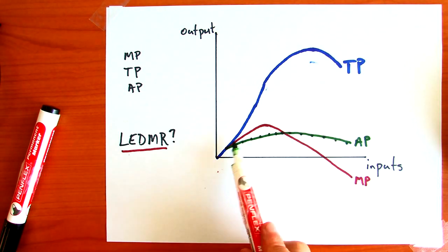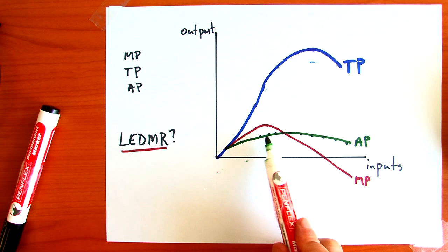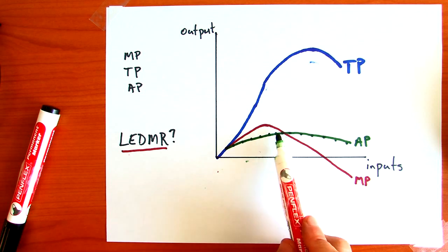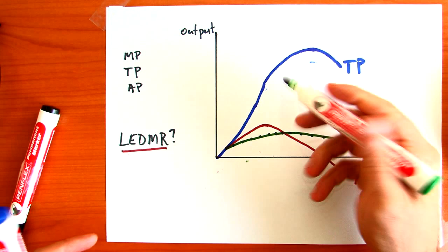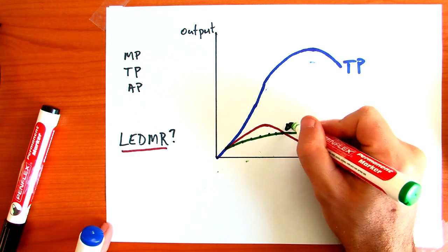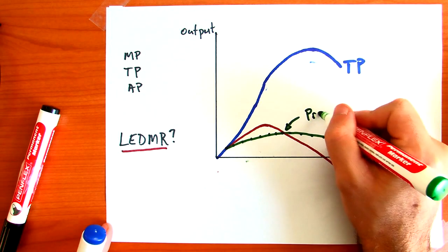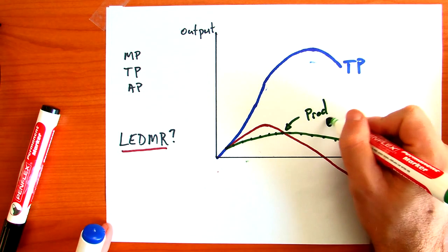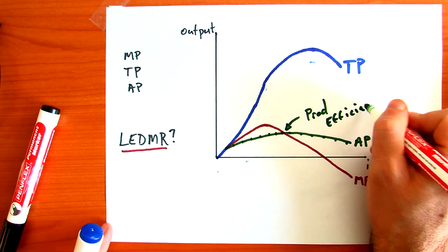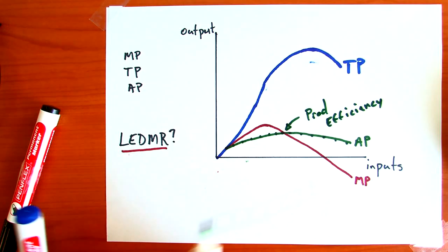In average production, it's a little bit different, because again, what we see is that even though our marginal production is falling, the law of diminishing marginal returns doesn't actually affect average production until this point here. And this point here is actually what we refer to as productive efficiency. It's the point at which we're producing at the most efficient rate.